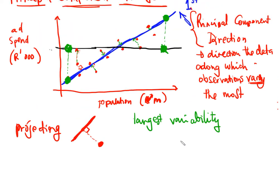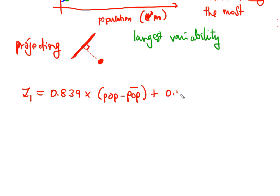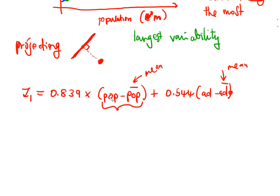The blue line can be rewritten as: Z1 equals 0.83 times (pop minus pop-bar) plus 0.544 times (ad minus ad-bar). We're going to see how these values 0.83 and 0.544 are attained. The pop-bar is the mean of the population and ad-bar is the mean of the ad spend. Each population value is subtracted by its mean — this is called mean normalization.